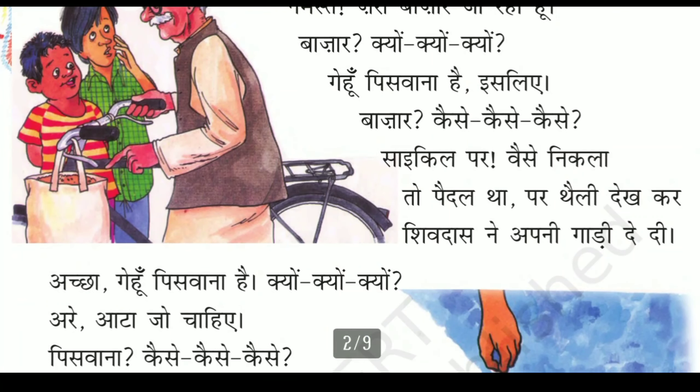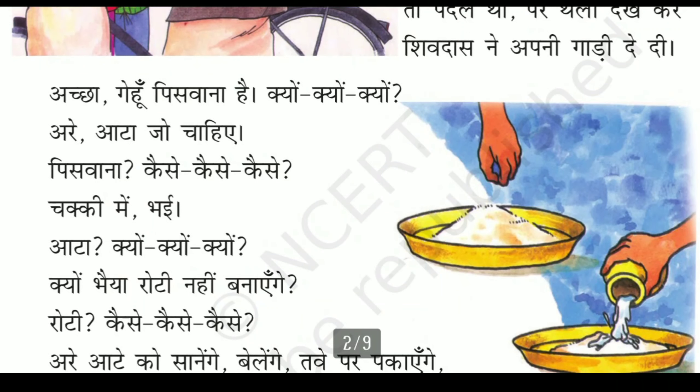Market — how, how, how? Cycle par — on the cycle. By the way, I started walking, but seeing a bag in my hand, Shivdas gave me his vehicle — that is, he gave him his cycle.